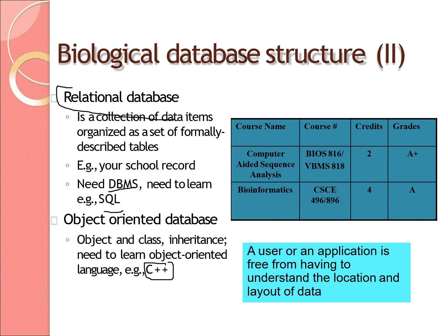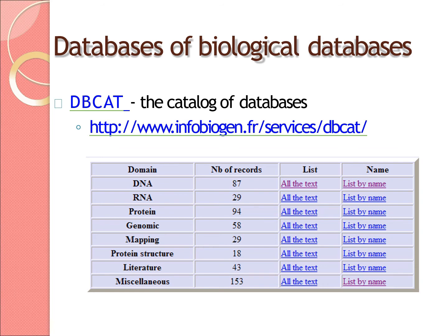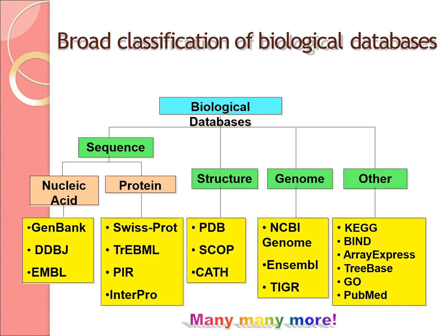There are some key databases of value to the biological community — you can pause the video and type the link shown to access a page listing all the relevant databases for biotechnology and computational biology. Another resource is DBCAT — pause and type that link to find databases organized by domain such as DNA, RNA, protein, and genomic mapping.